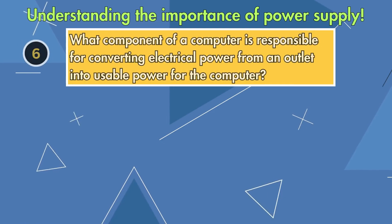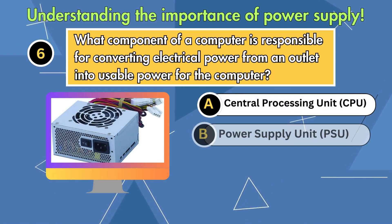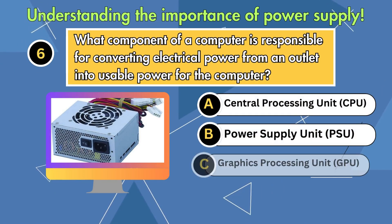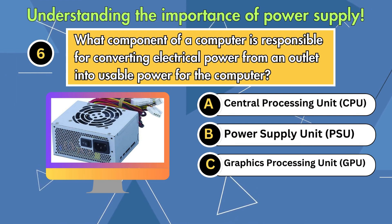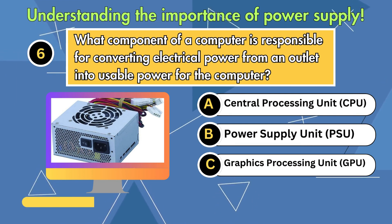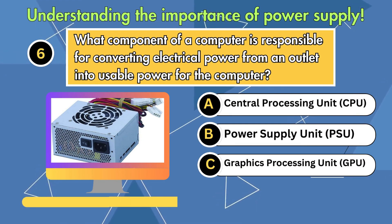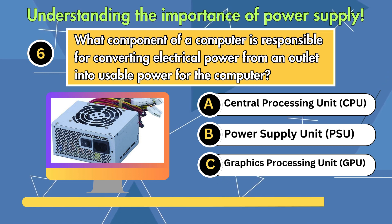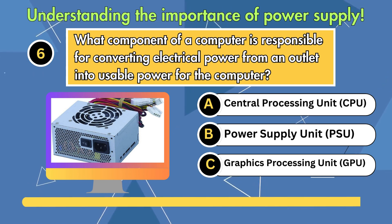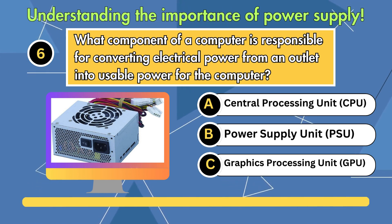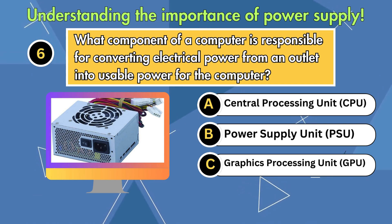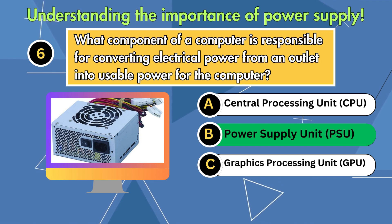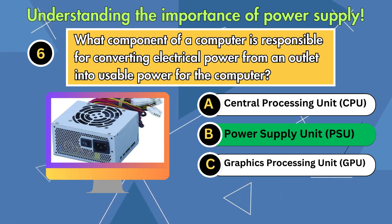What component of a computer is responsible for converting electrical power from an outlet into usable power for the computer? Option 1: Central Processing Unit (CPU). Option 2: Power Supply Unit (PSU). Option 3: Graphics Processing Unit (GPU). Answer is Power Supply Unit (PSU).